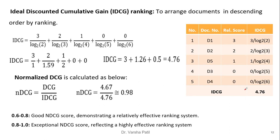Next, we divide DCG by IDCG — the Ideal Discounted Cumulative Gain. For IDCG, we arrange the documents in descending order of their relevance scores: D1, D2, D5, D3, D4. We apply the same formula and compute IDCG. Then NDCG equals DCG divided by IDCG, which equals 0.98. An NDCG value between 0.6 and 0.8 is a good score demonstrating a relatively effective ranking system, while a score between 0.8 and 1.0 is exceptional, reflecting a highly effective ranking system.